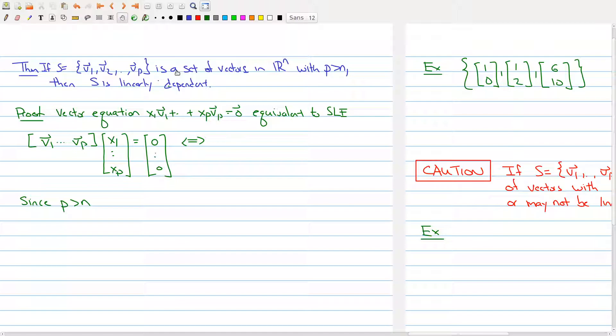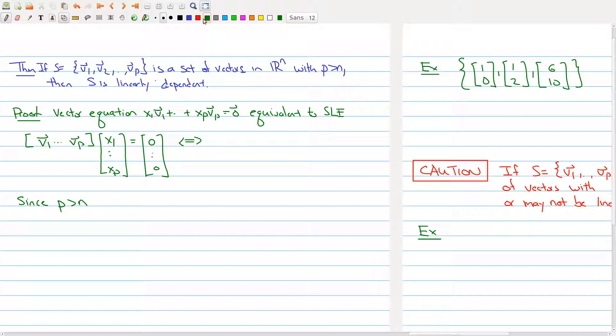Well, we have all the tools to answer this. We're interested in looking at this vector equation. We want to see if there's a non-trivial solution to this. This is equivalent to this matrix equation. And I can rewrite this as a matrix in its augmented form. So this would be my columns, v1 through vp. And we're setting it equal to all zeros.